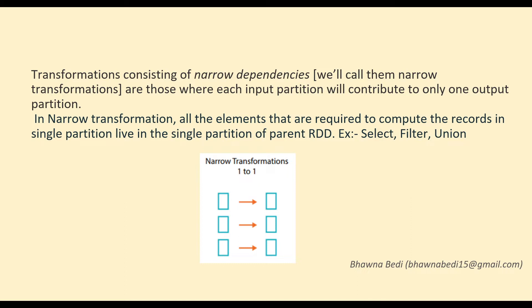In Spark your data is actually stored within partitions. In case of narrow transformations, whenever you apply a particular transformation and it gets applied to all the records in a single partition without needing to get data from another partition — that transformation is called a narrow transformation. Select, filter, and union are examples of narrow transformations.